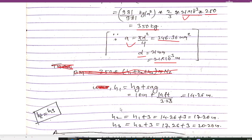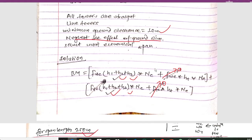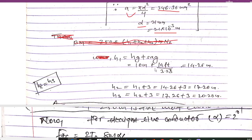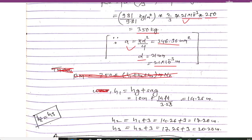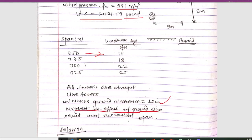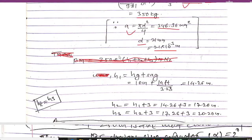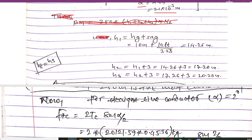Now we calculate S1, where S1 = SG + sag. SG is the minimum ground clearance = 10 meters. For the 250-meter span, the maximum sag from the table is 14 feet. Converting to meters by dividing by 3.28 gives approximately 4.26 meters. Therefore S1 = 10 + 4.26 = 14.26 meters. S2 = S1 + 3 = 17.26 meters, and S3 = S2 + 3.